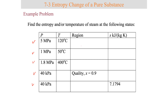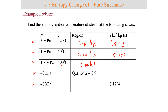To fill in the blanks: looking up 5 MPa at 120°C, you find this is in the compressed liquid region with an entropy value of 1.523 kJ/kg·K. For the second state at 1 MPa and 50°C, again a compressed liquid state with entropy 0.703 kJ/kg·K. State 3 at 1.8 MPa and 400°C gives a superheated vapor state with entropy 7.179 kJ/kg·K.